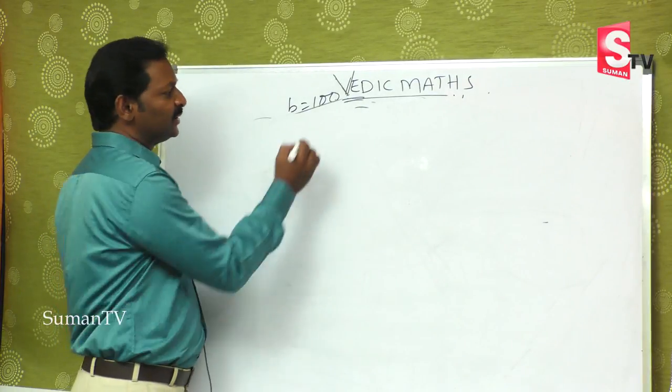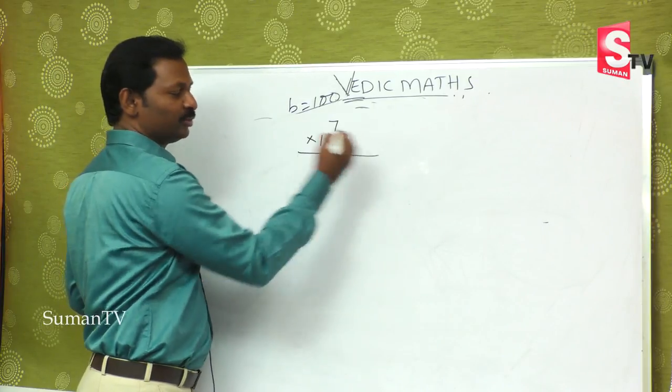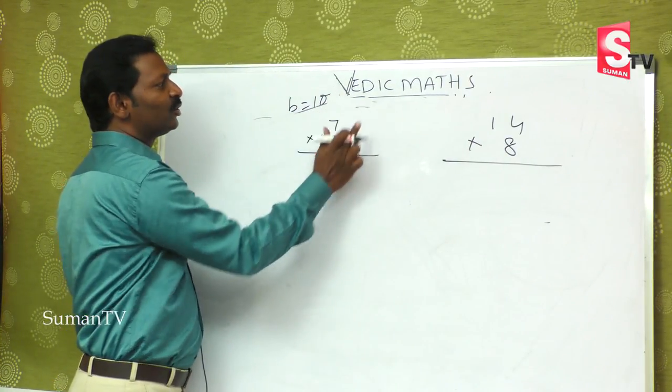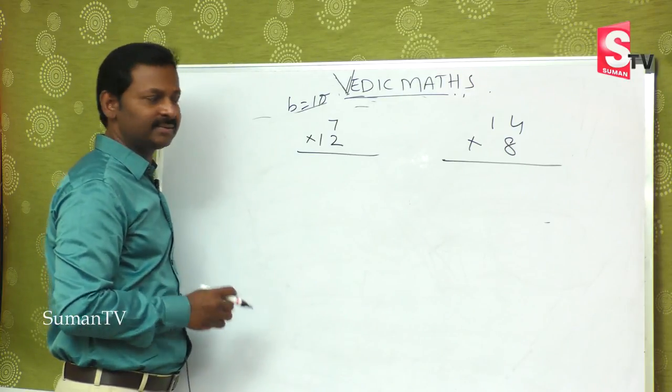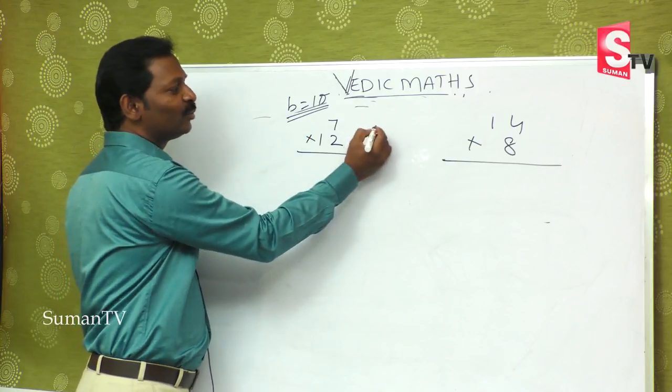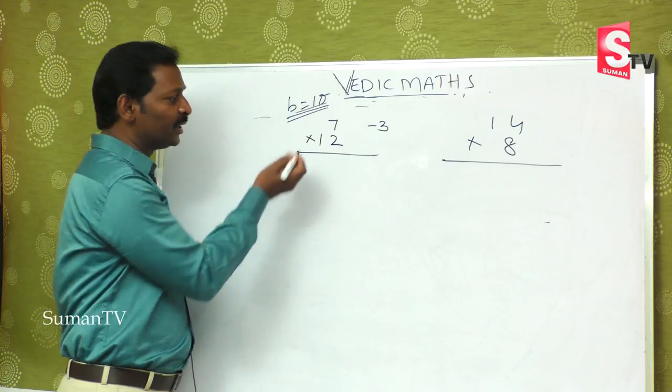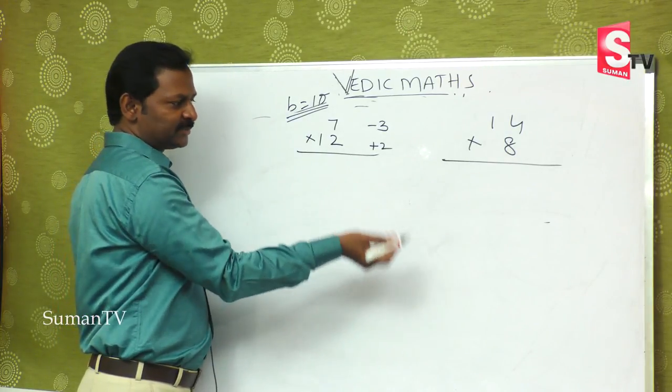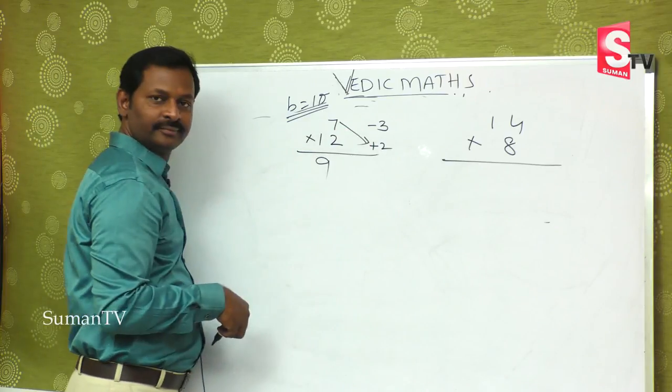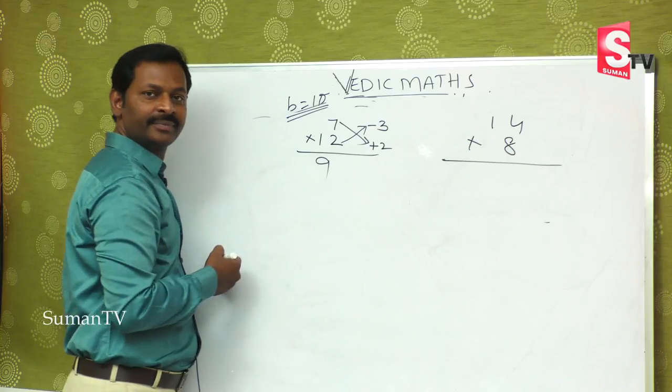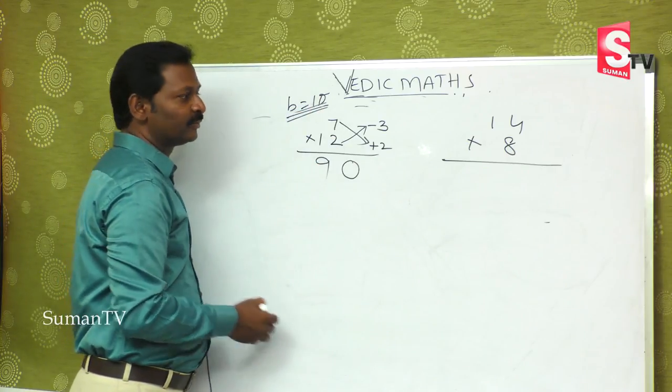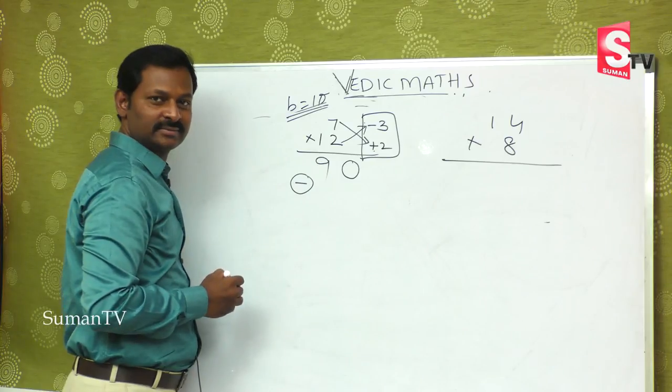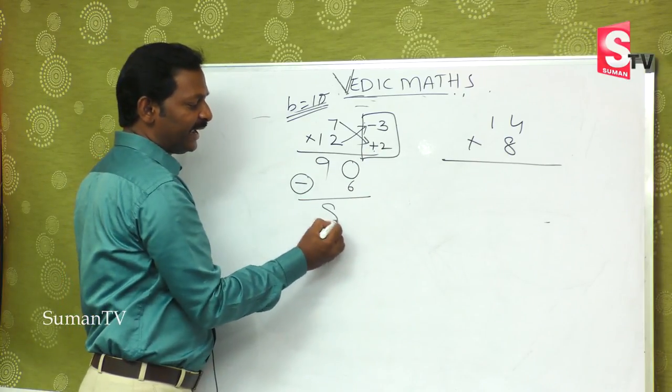First, I will take single digit numbers. Suppose 7 is multiplied by 12. The base value is 10. 7 is less than 10 by 3, so minus 3. 12 is greater than 10 by 2, so plus 2. As per the previous method, 7 plus 2 equals 9, or 12 minus 3 equals 9. First part is 9. Base 10, so we put one zero. But here we have minus into plus, which gives minus. So 3 times 2 is 6, and 84 is the answer using the base complement method.